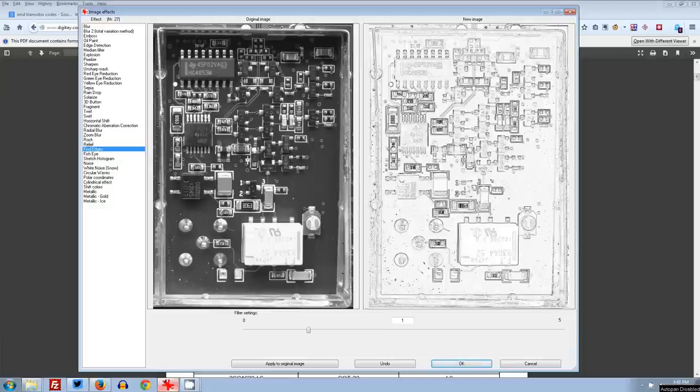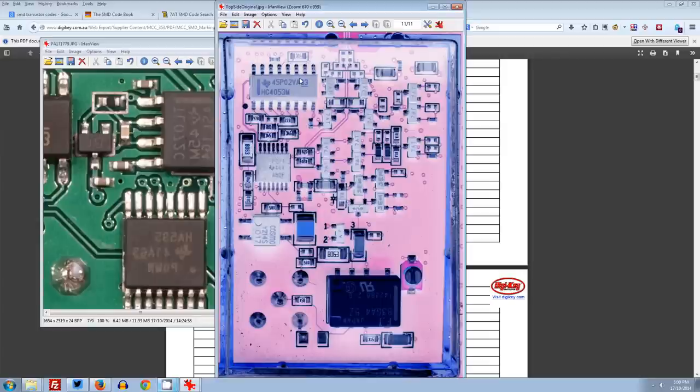Once you've got your images loaded in, then you can do various processing techniques on them. In this case I've converted to black and white here which sometimes helps and then I've added a filter to find all the edges like this. Then you can further reduce the color. So when you go to print these on overhead transparencies, you're pretty much left with just the traces and the pads and components and outlines of the components.